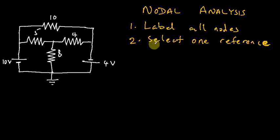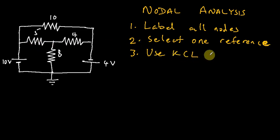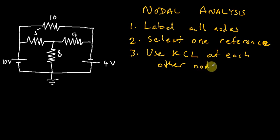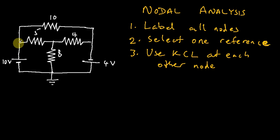So we label all nodes, select one as our reference, and the third step is to use KCL at each other node. Now, a node is wherever you have more than two components. At this particular point we have a voltage source, a resistor, and another resistor — three components connected together — so this is a node. Let me call it node A.